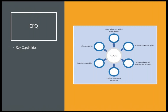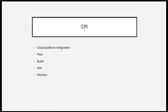What is CPI? CPI is Cloud Platform Integration, or SAP CPI — that is SAP Cloud Integration. SAP CPI is a middleware; it is there for integration purposes. Your CPQ was SaaS, and your CPI is PaaS — Platform as a Service.